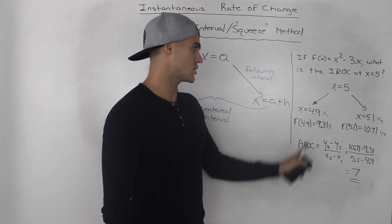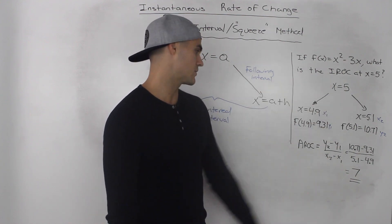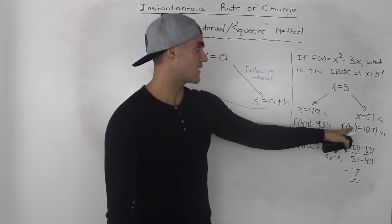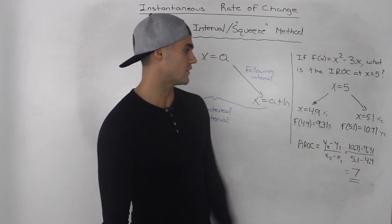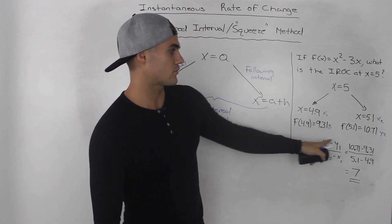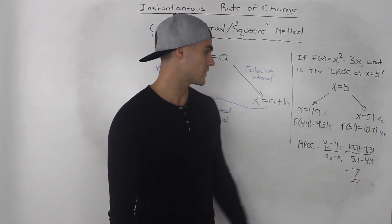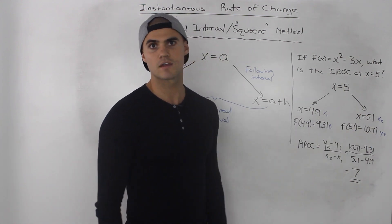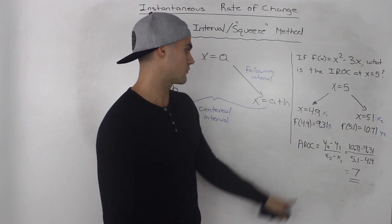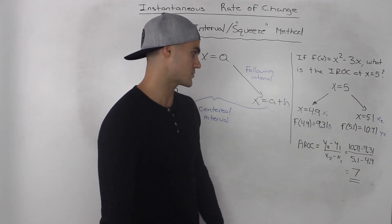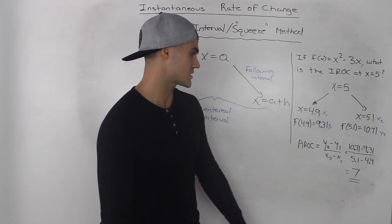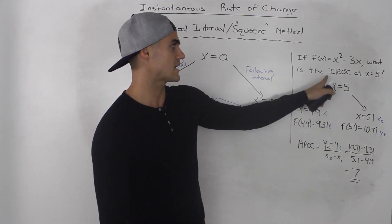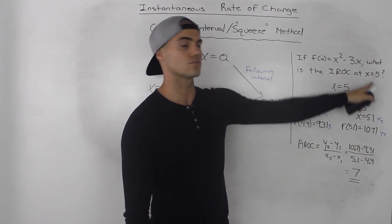Now we find the average rate of change between these two points. We need the y values at x equal to 4.9 and x equal to 5.1. Plugging those into the function, we get 9.31 and 10.71. So those are our (x1, y1) and (x2, y2). Using the average rate of change formula — y2 minus y1 over x2 minus x1 — we get 7. So 7 is the instantaneous rate of change at x equal to 5.